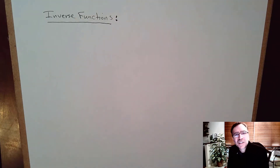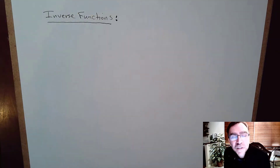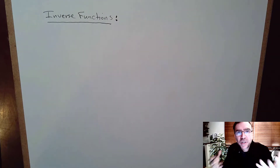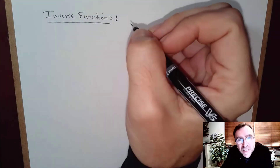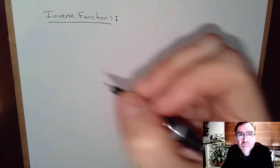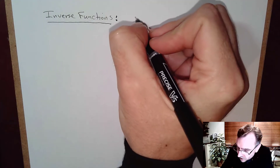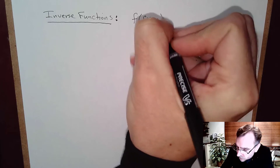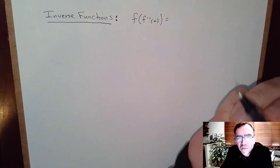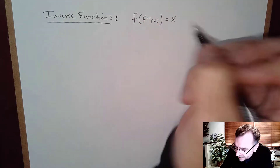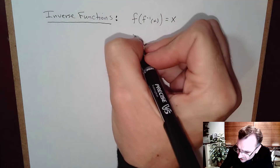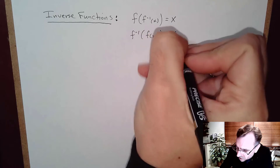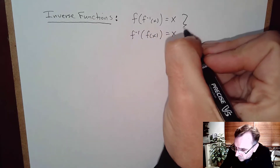In this video I want to talk about inverse functions in the context of our trig definitions. First, let's remember the definition from algebra: if we compose F with F inverse, we get out X — they cancel each other. That occurs both ways, so F inverse of F of X is also equal to X, over their common domain.